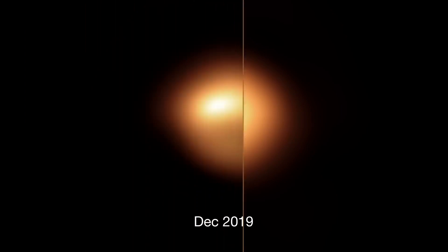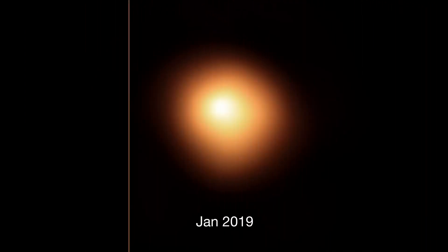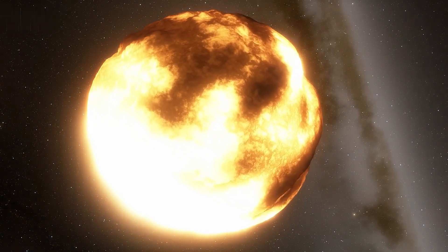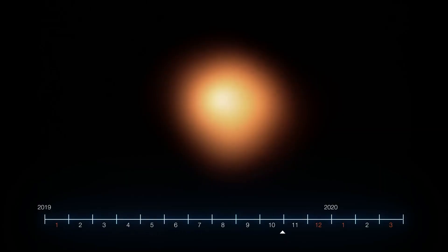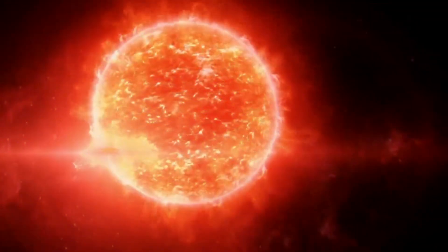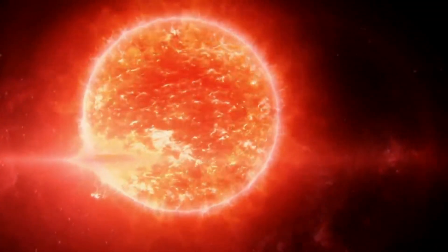In late 2019, Betelgeuse started to dim in a way that had never been seen before. For a star that had been stable for thousands of years, this sudden change was concerning and led to a lot of speculation. Many wondered if Betelgeuse was about to explode as a supernova. Was this the end for one of the most well-known stars in our sky? However, the truth is much more complex and interesting than anyone expected.